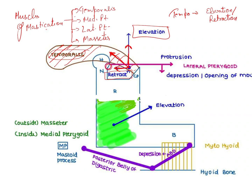At the neck of the condyle there is a muscle attached, known as the lateral pterygoid muscle. Its vector component is in a particular direction that breaks down into two: one is toward the forward direction, known as protrusion, and another is toward the lower direction, which is depression. So depression and protrusion are both performed by the lateral pterygoid.